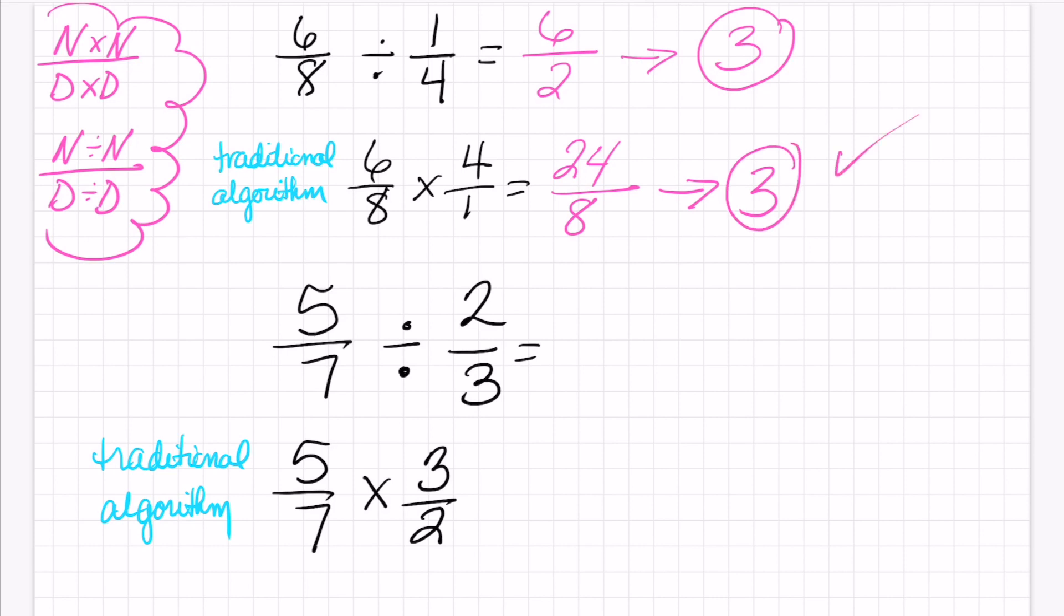But what about numbers that are not easy? So for example, 5/7 divided by 2/3. So we'll do the traditional algorithm first where we just multiply by the reciprocal. And I flipped it and I know this is supposed to be 15/14, which is 1 and 1/14.